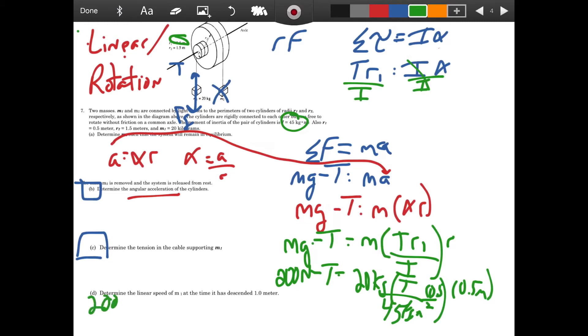So tension over 45 times meters squared times r1, which is 0.5. So times 0.5 times 0.5 meters. Now I'm just going to multiply it out. So I have 200 newtons minus t equals on this side, we have 20 times 0.5 times 0.5 divided by 45 equals 0.11 t. If I add a t to both sides, and then I get 200 divided by 1.11, I get that the tension is equal to 180 newtons.